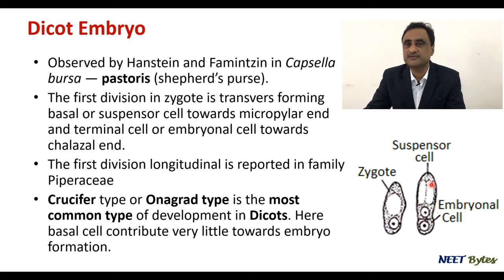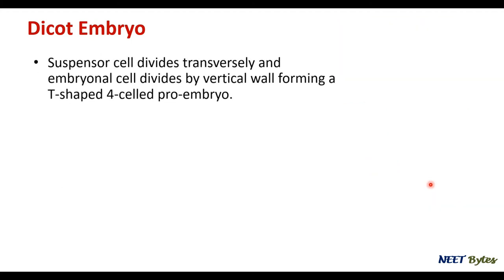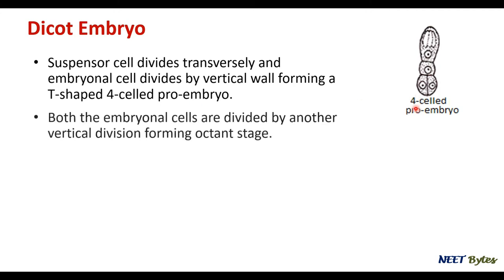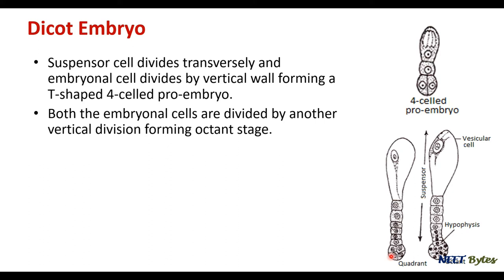After the initial division into suspensor and embryonal cells, the suspensor cell divides transversely and the embryonal cell divides by a vertical wall, forming a T-shaped four-cell embryo. Up till this stage, the development in monocot and dicot is the same. This is called the four-cell pro-embryo. Both embryonal cells then divide by another vertical division, forming the octant stage — first the quadrant stage, then the octant stage.